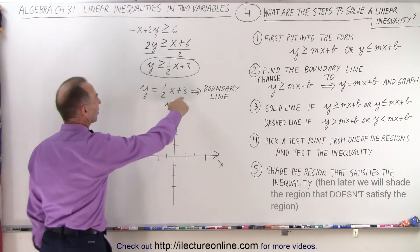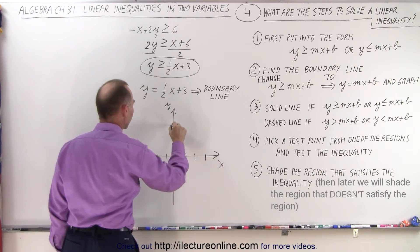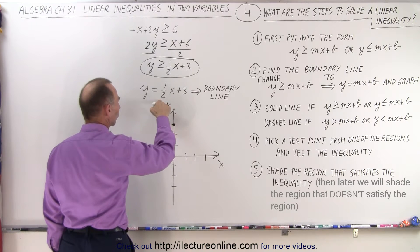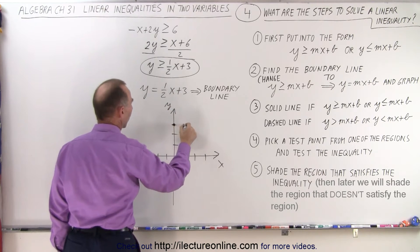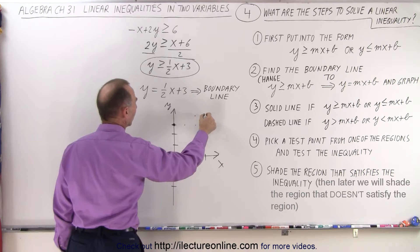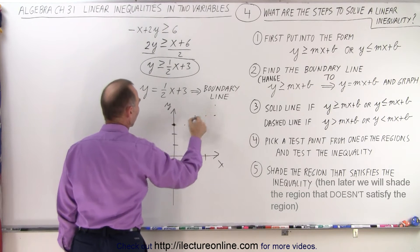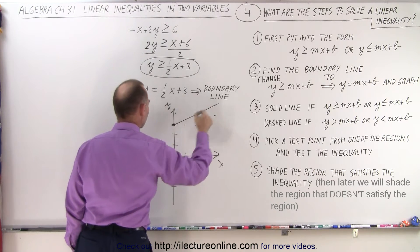And our y-intercept is 3, so that's right here. And we can see the slope is plus 1 half. That means we have a run of 2 and a rise of 1, a run of 2 and a rise of 1. So the line looks like this.